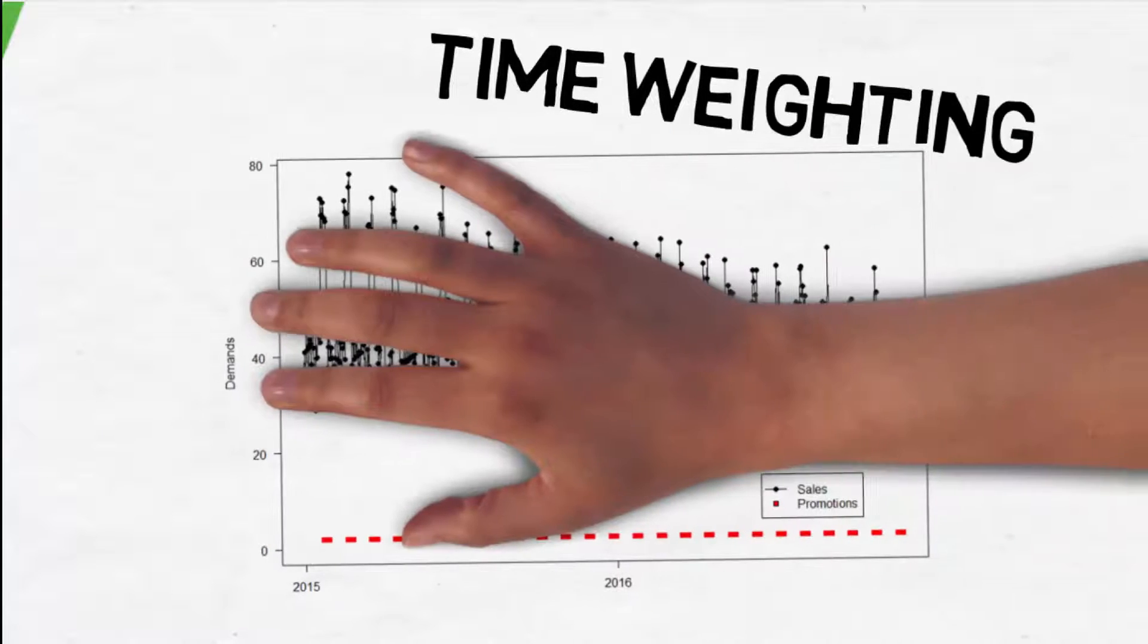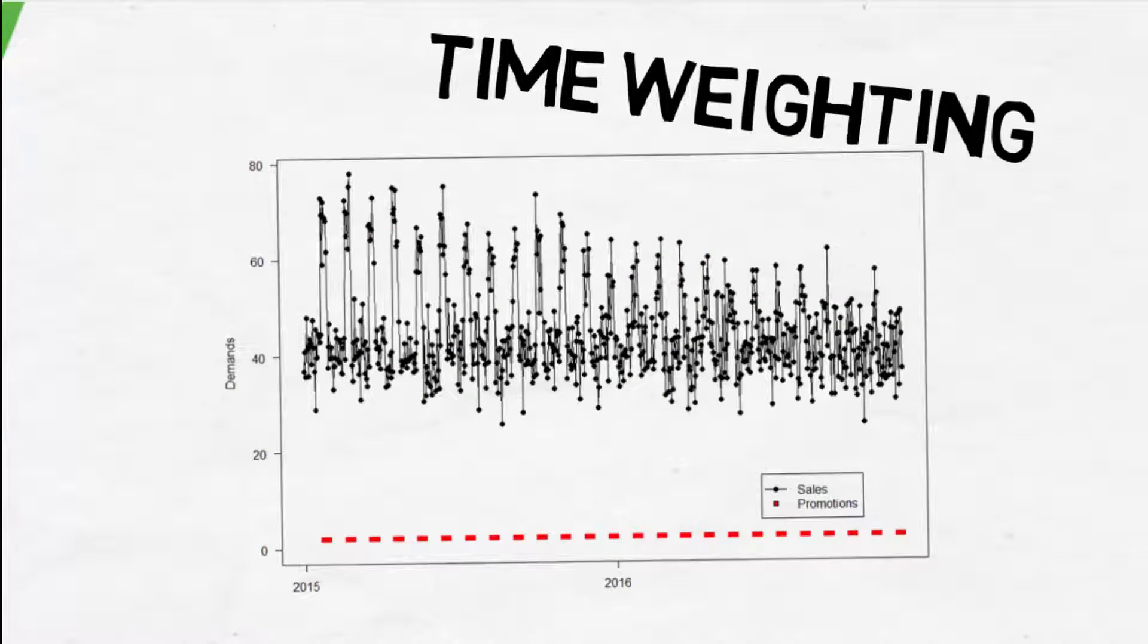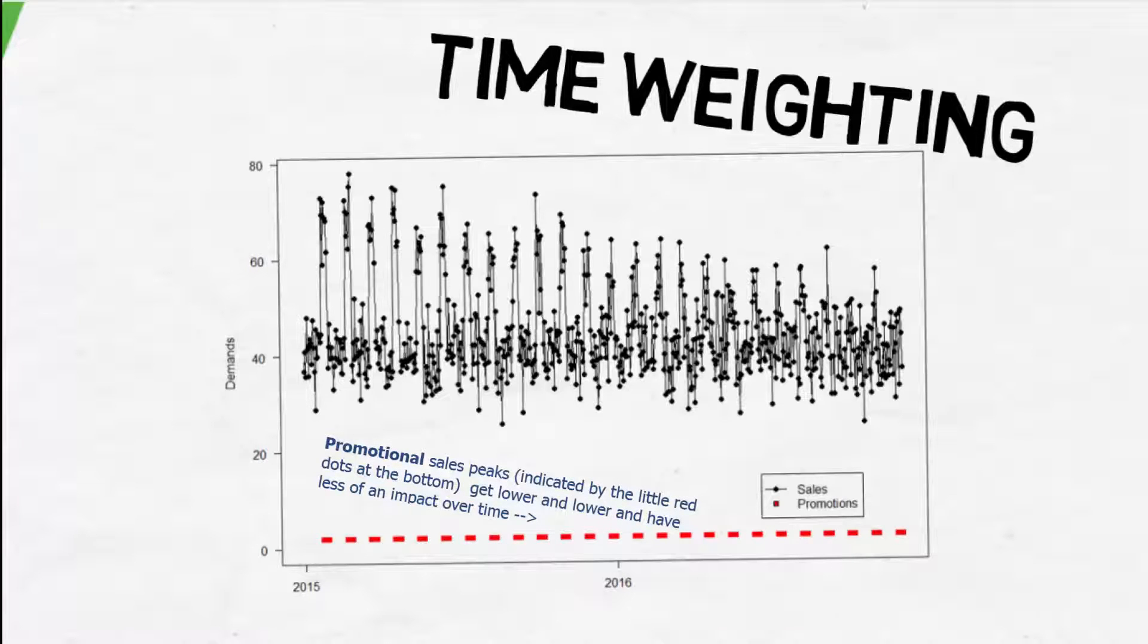Time weighting. Now, this confusing little line graph that only a data scientist could appreciate is representing weighting, which basically means that UDF can weight recent sales more heavily than older sales to better align with the latest consumer demand. The rationale is that consumer preferences may change over time. The idea is that older data tends to be less relevant to current demand and vice versa.